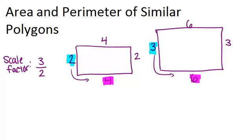Now let's figure out the perimeter and area of each of these rectangles and notice if there's any pattern between the ratios there and if those ratios relate at all to the scale factor. So to find the perimeter of each rectangle, we just have to add up all four sides. For the smaller rectangle, the perimeter will be 12 units, and for the larger rectangle, the perimeter will be 18 units. And that's just gotten by adding up six plus three plus six plus three.